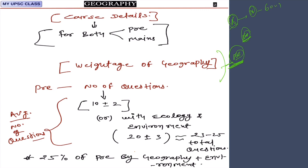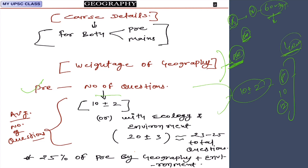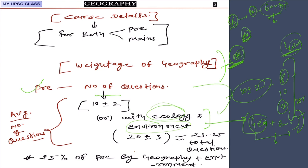You don't need to remember huge amounts of data or dates. Basically 60 to 70 percent of concepts are scientific in nature — how landforms are created, what is the universe, physical geography, and basic parts of Indian geography. These things require very less effort, so with minimal effort you can get maximum marks. In pre-exam, the number of questions is around 10, plus or minus 2 — sometimes 8, sometimes 10, sometimes 12 questions from geography.